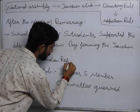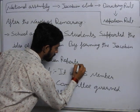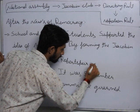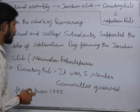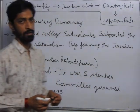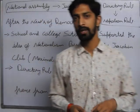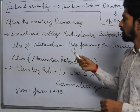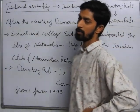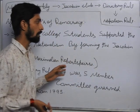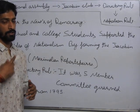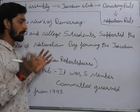The leader's name was Maximilian Robespierre. This is the name of the Jacobin Club leader as written. The idea of nationalism was spread out through the Jacobin Club across France and Europe.